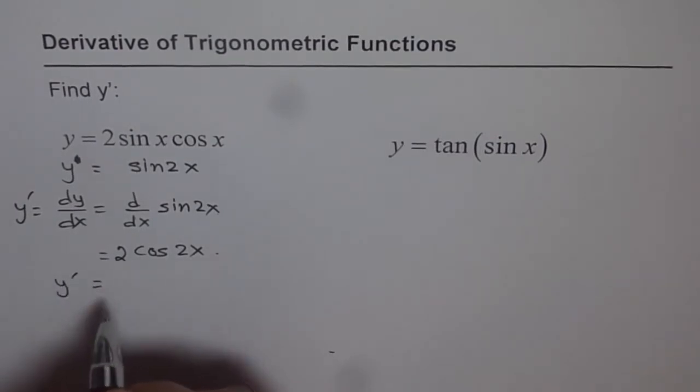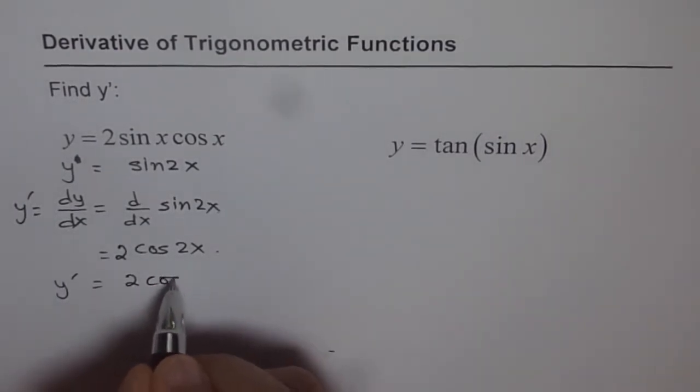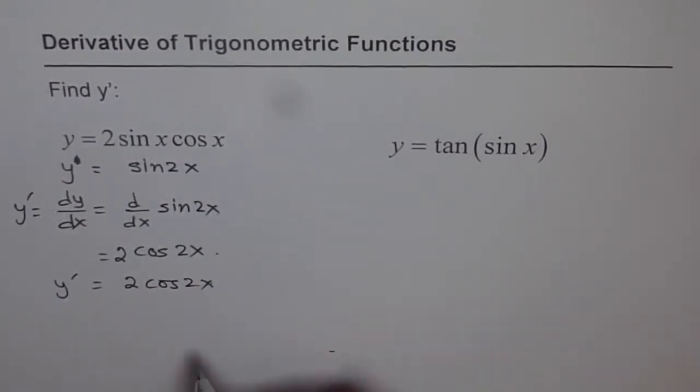So for us, y dash is equals to 2 times cos 2x. That is the answer. If you do the product rule, you get the same answer. You need to simplify a bit to come to this stage, okay?